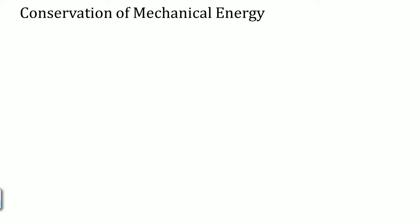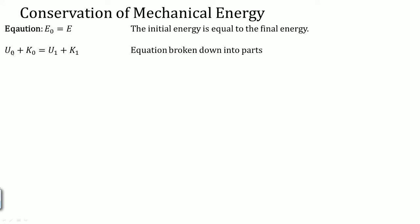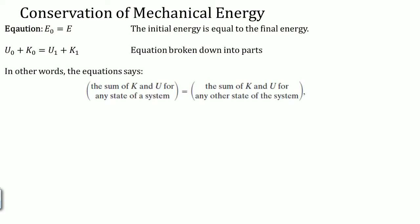So what is conservation of energy? It states that the energy initial is going to be equal to the energy final. That means potential plus kinetic initial is going to be equal to potential plus kinetic final. The equation says the sum of kinetic energy and potential energy for any state of the system at any point is equal to the sum of kinetic energy and potential energy at any other point in that system, as long as the system is closed.